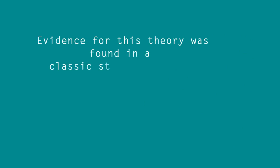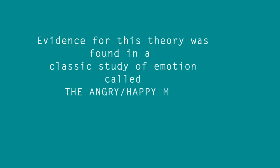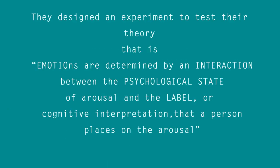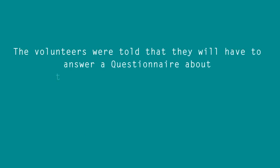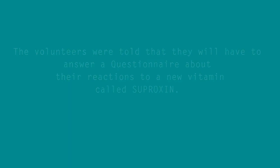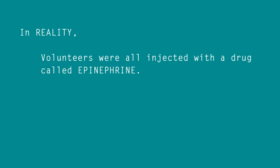As people demand evidence, evidence for this theory was found in a classic study of emotion called the angry-happy man. In 1962, Stanley Schachter and Singer designed an experiment to test their theory that emotions are determined by an interaction between physiological arousal and the label that a person places on the arousal. The volunteers were told they would answer a questionnaire about their reactions to a new vitamin called Suproxen. In reality, they were lied to.